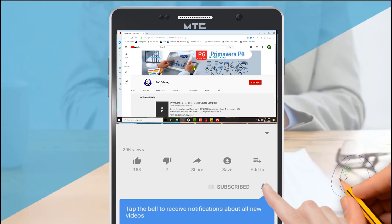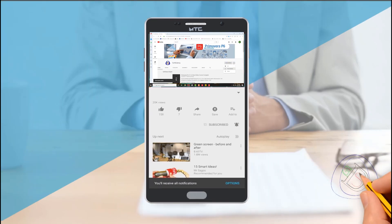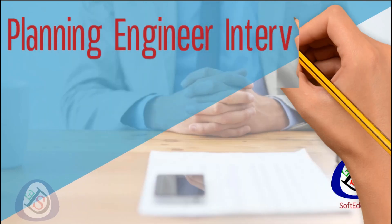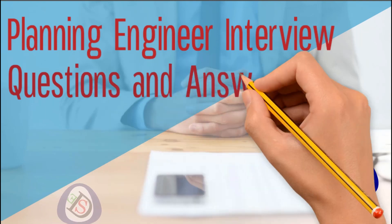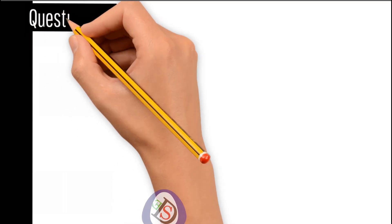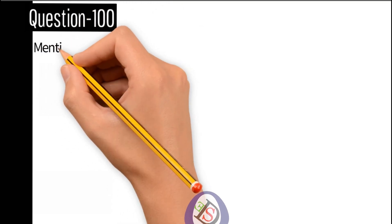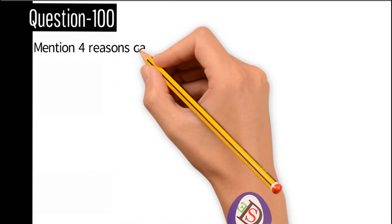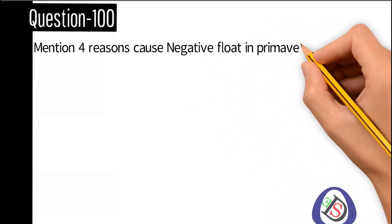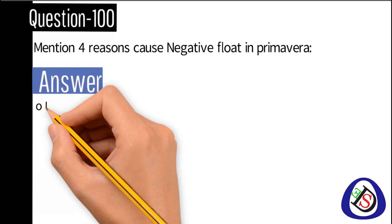Welcome viewers, you are watching SoftyDemi, a software engineering academy. Today I am going to discuss planning engineers question and answers part number 11. Question number 100: Mention four reasons that cause negative float in Primavera.